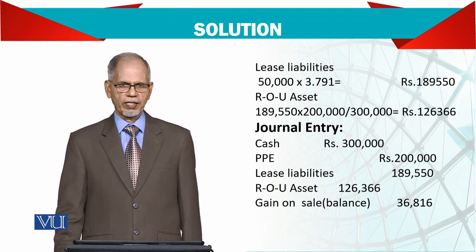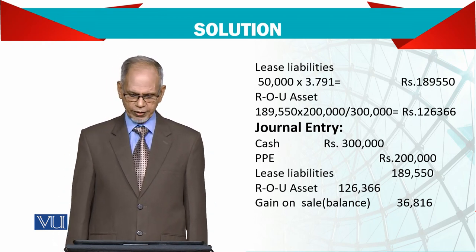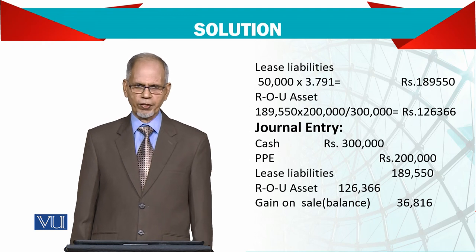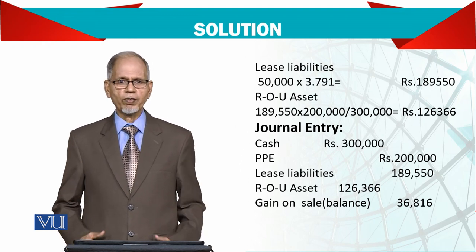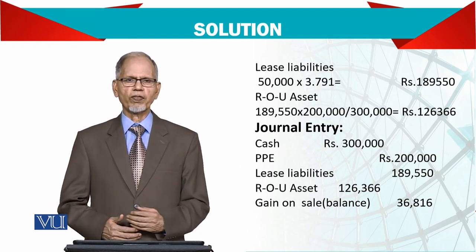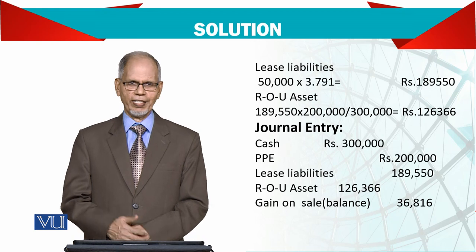So your right of use asset is 126,366. A journal entry is also important to show how much gain was made on this transaction.